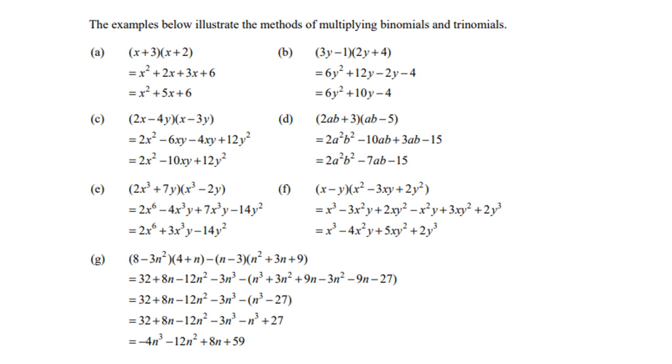Look at F. X times X squared is X cubed. X times minus 3XY is minus 3X squared Y. And X times 2Y squared is 2XY squared. Then the next one. Y times X squared. Y times negative 3XY. And Y times plus 2Y squared.